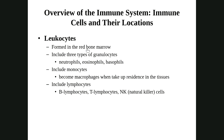There are five types of white blood cells. We've mentioned these before: neutrophils, eosinophils, basophils, monocytes, and lymphocytes. Let's talk about these in a little more detail, and remind ourselves of what we covered in the previous chapter dealing with blood.